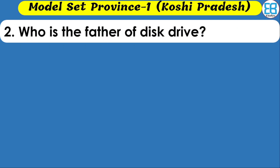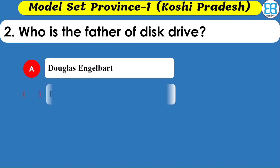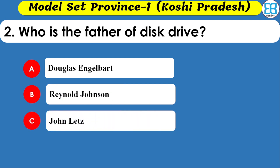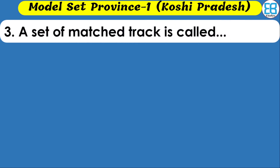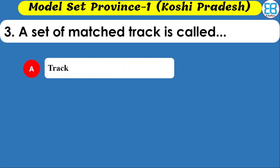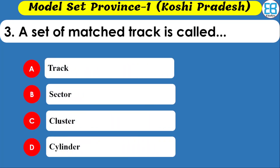Who is the father of the described field? Options include Douglas, Reynolds Johnson, and John James Russell. The correct option is Reynolds Johnson. A set of master tracks is called a master track, which contains sector, cluster, and cylinder.